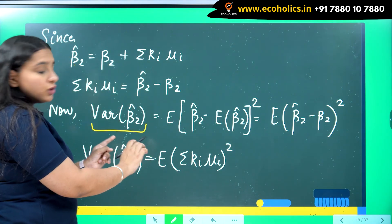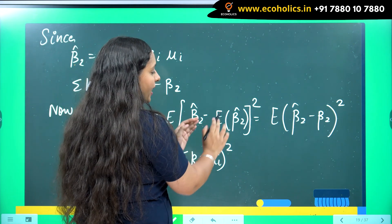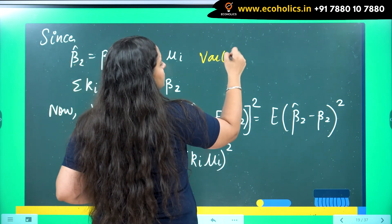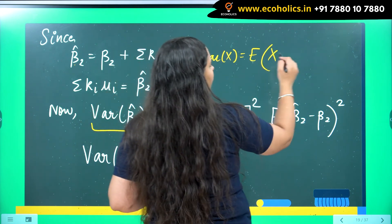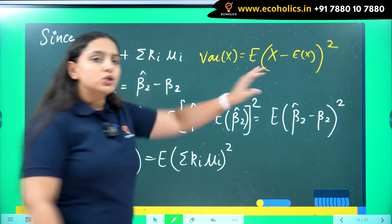Now you will wonder why I am doing this. So I have a full simplification on this. So what is variance of beta 2 hat? It is equal to expectation of beta 2 hat minus expected value of beta 2 hat whole square. Because what is variance of x? It is equal to expectation of x minus expected value of x whole square. So this is the formula.